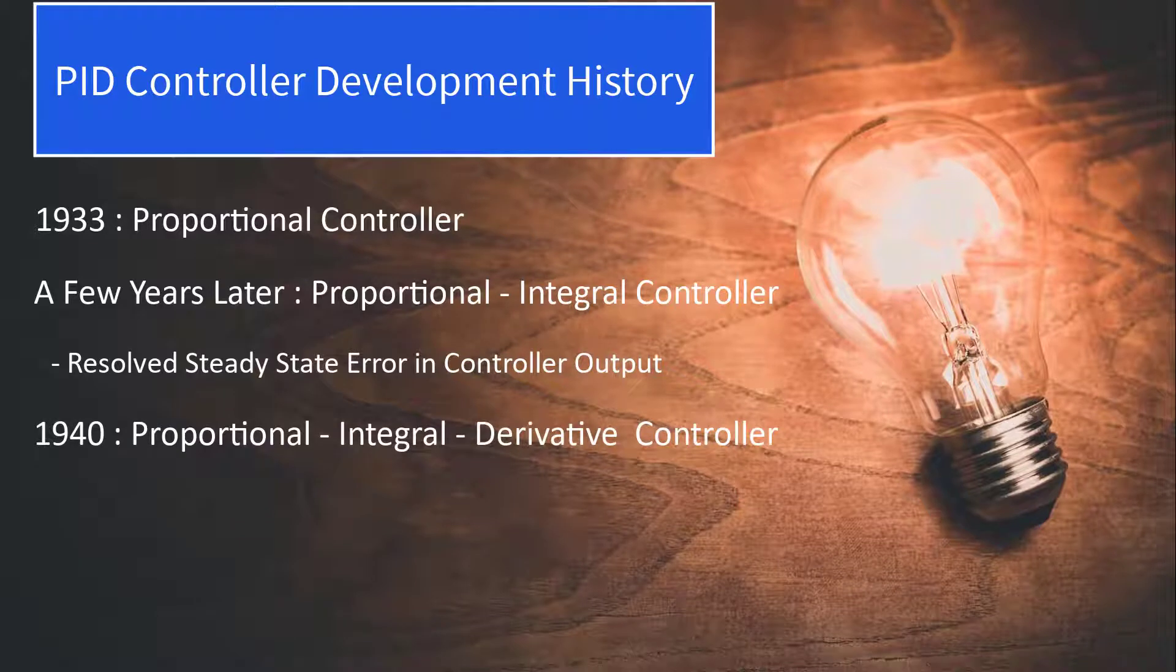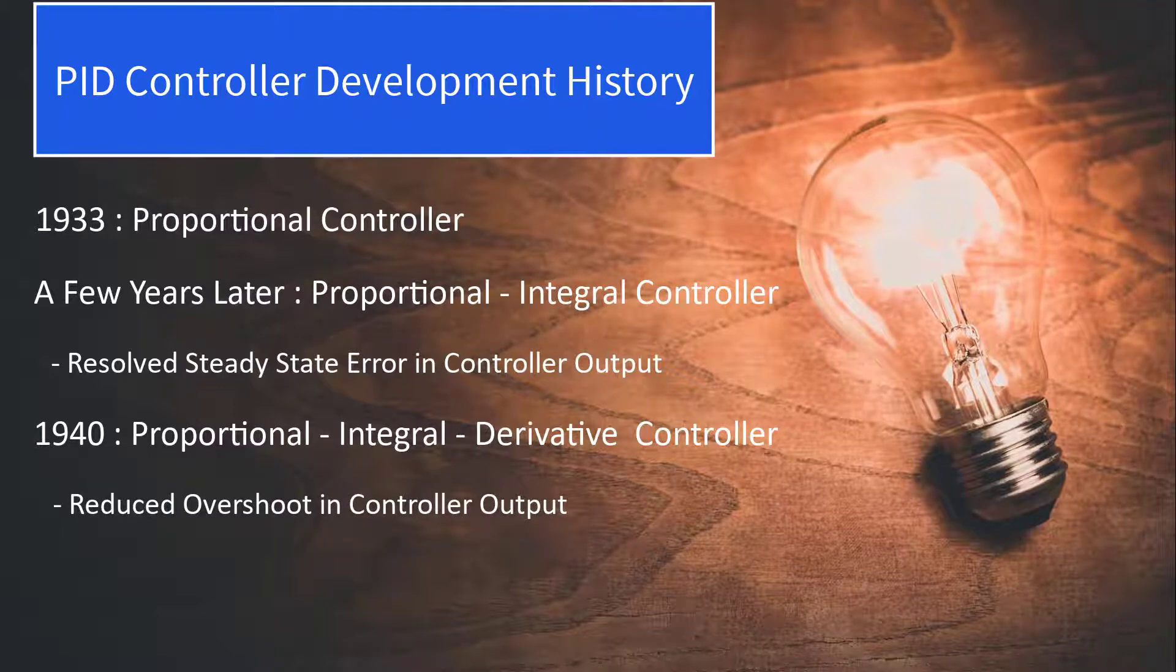Then, in 1940, Taylor Instrumental Company developed the first PID pneumatic controller with a derivative action, which reduced overshooting issues. By the mid-1950s, PID controllers began being widely adopted for industrial use.